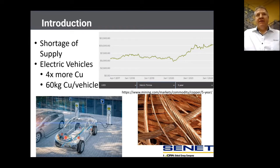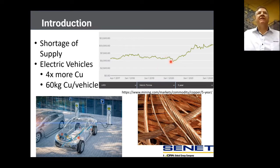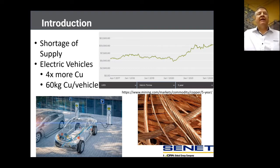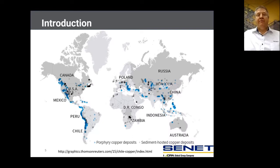There's been a shortage in supply of copper recently, which has resulted in the price increasing from approximately $6,000 a tonne to more than $10,000 a tonne where it's sitting at the moment. This is partly being blamed on electric vehicles, which use approximately four times more copper than normal vehicles — approximately 60 kilograms of copper per vehicle.